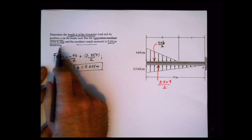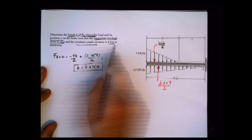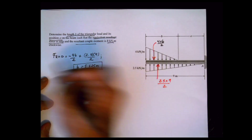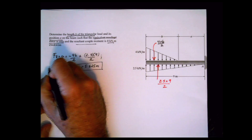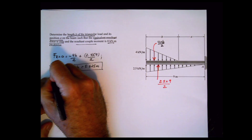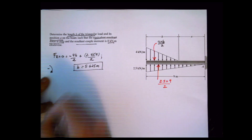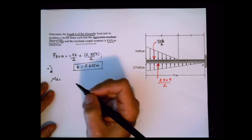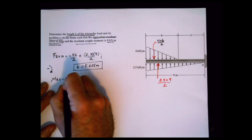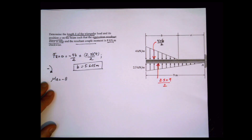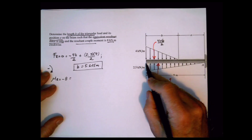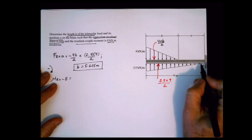The resultant moment is 8 clockwise. Depending on what you are doing, you can assume positive or negative — let's say clockwise is negative. So the resultant moment will be negative 8 in this case because it's clockwise. I'll take the moment with respect to point a — you can also take it with respect to another point if you want.